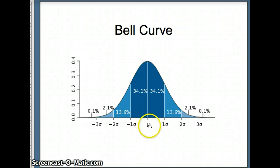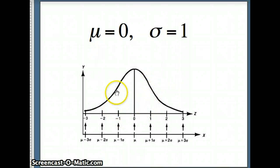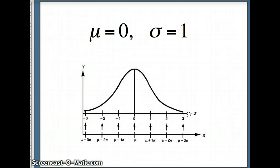For a general bell curve, the mean could be anything and the standard deviation could be anything. But in a standard normal, we have certain requirements — mainly that the mean is zero and the standard deviation is one. Zero is right in the middle; one is at the point of inflection on this side; negative one is at the point of inflection on that side. There's not much data beyond negative three or beyond three — 99.7% of the Z scores will be between negative three and positive three.